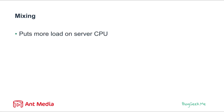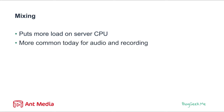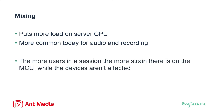With mixing, we're putting a lot of strain on the CPU of the server. The server needs to be very strong because it needs to decode all incoming streams, compose the image, mix, and send it out to participants. This decoding and encoding takes a lot of CPU. It is most commonly used today for audio mixing or for recording — if you want to record a session with multiple participants, you mix them to get a single recording. The more users in a session, the more strain on the MCU, while the devices are kept unaffected.